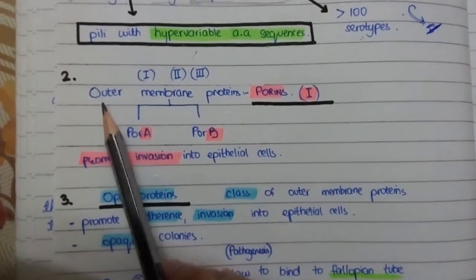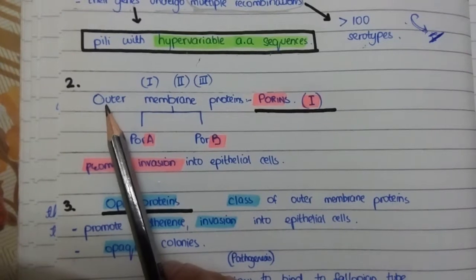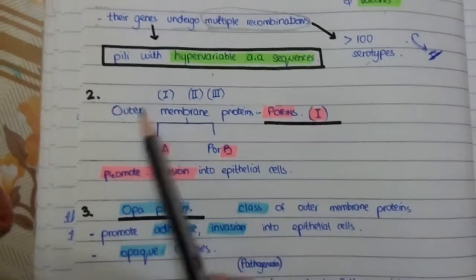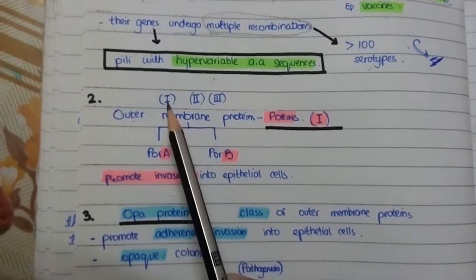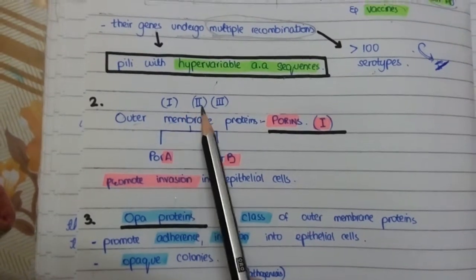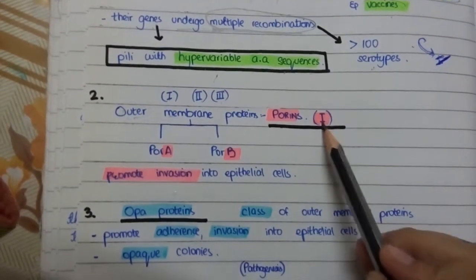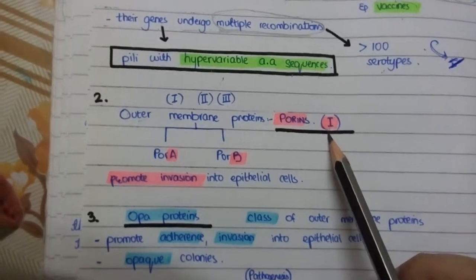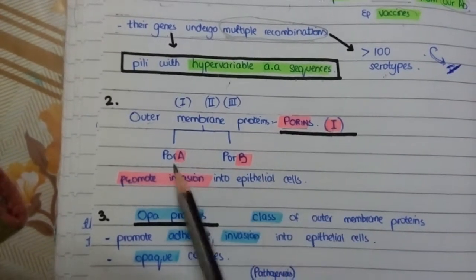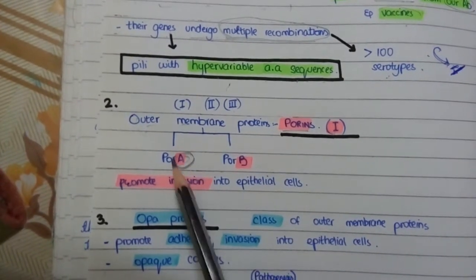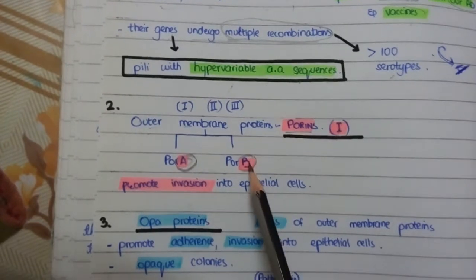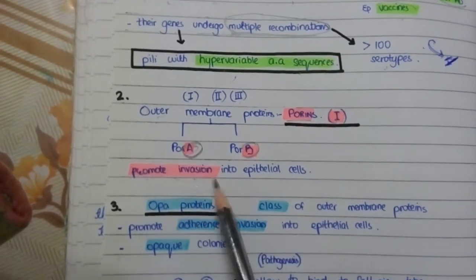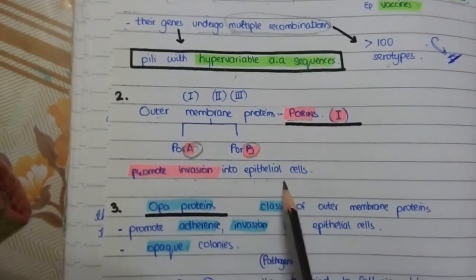The second virulence factor is the different classes of outer membrane proteins, which include class 1, 2, and 3. The class 1 proteins, formerly called class 1, are now called porins subclass A and subclass B. Their role is to promote invasion into the epithelial cell.